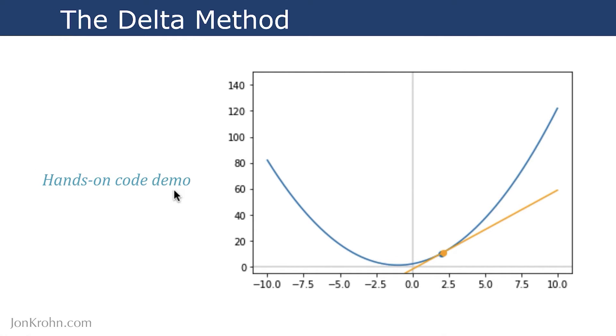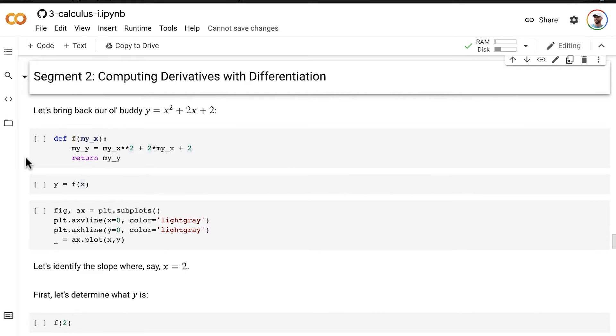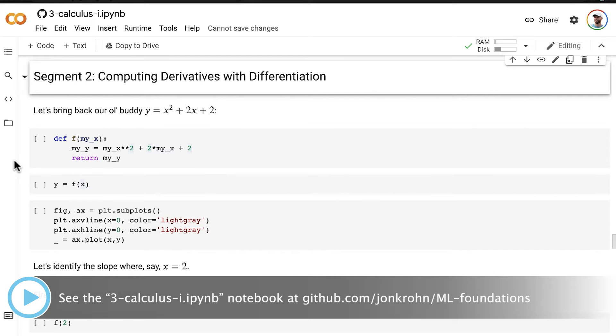By working through that hands-on code demo, we will eventually derive from first principles the most common representation of differentiation. Back in our subject three, calculus one, Jupyter notebook, we're now in segment two on derivatives and differentiation. Let's bring back our old buddy, this equation here, y equals x squared plus 2x plus 2.